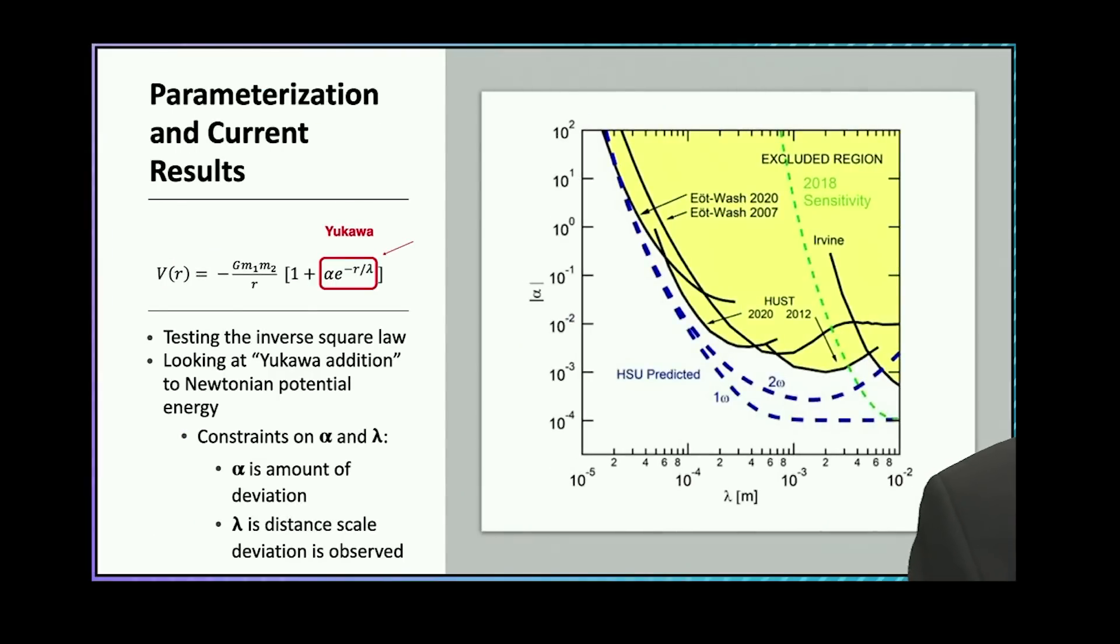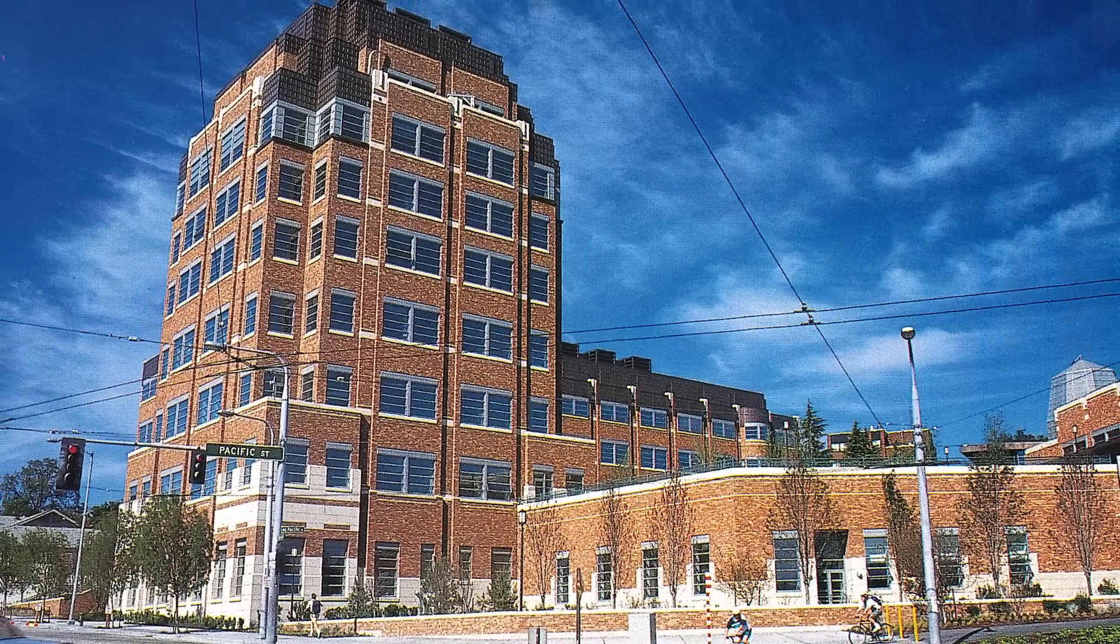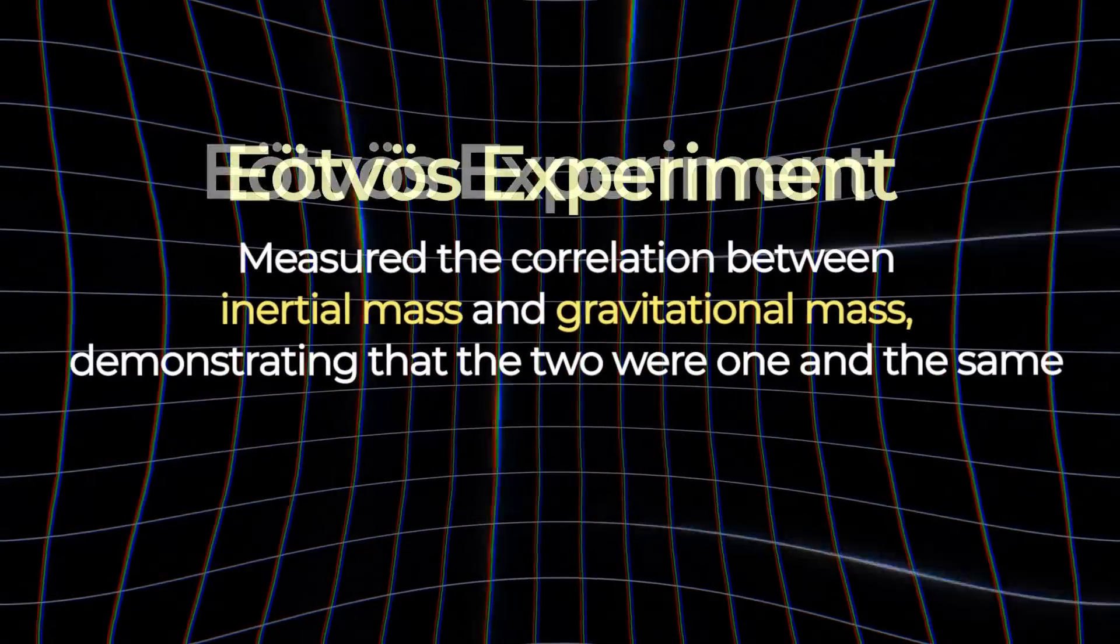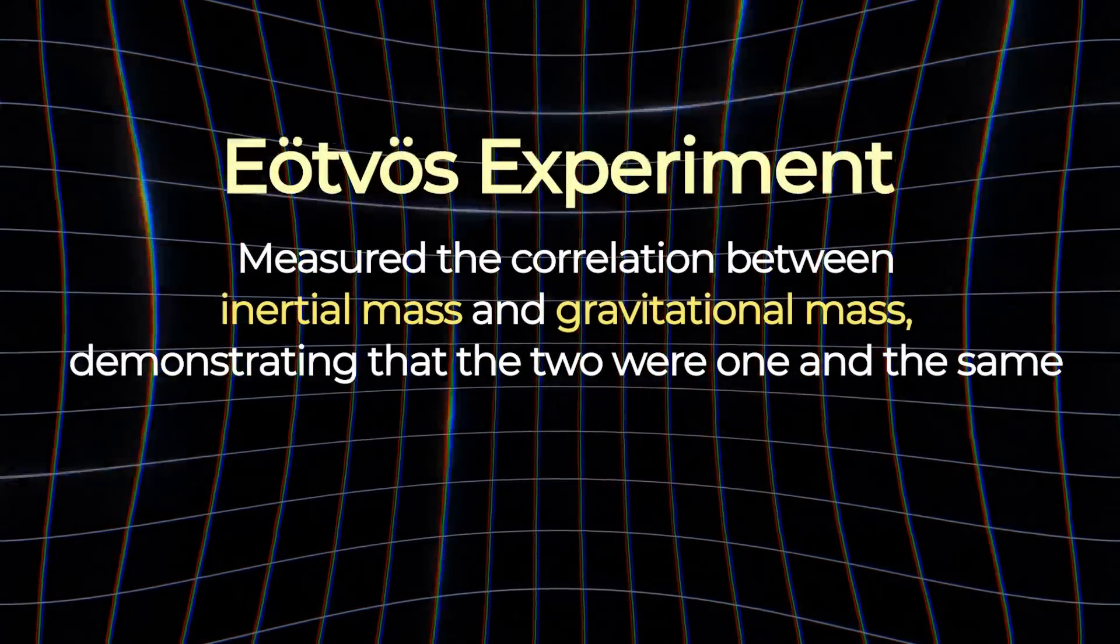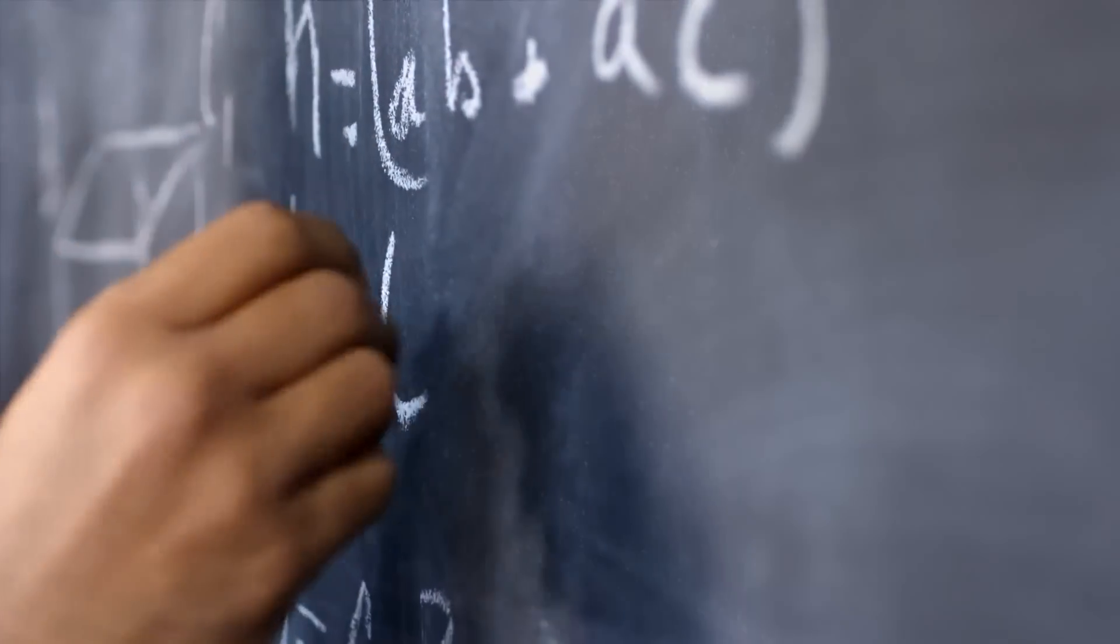So where are we currently? There are a series of experiments that have been carried out, really classical physics experiments being done with modern technology at the University of Washington. They're the so-called ETWASH experiments, and the joke is their name is ETWASH where WASH is for Washington.